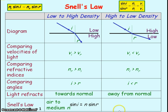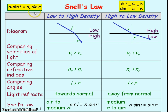For the specific case of light traveling from a medium of refractive index N into air: using Snell's law, for the incident medium N·sin(I) = 1·sin(R), since the refractive index of air is approximately 1. So N·sin(I) = sin(R), and therefore the refractive index N equals sin(R) / sin(I).